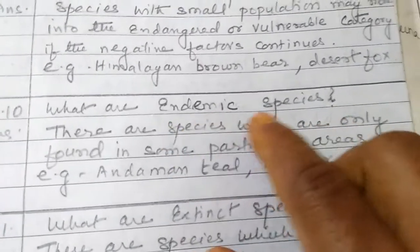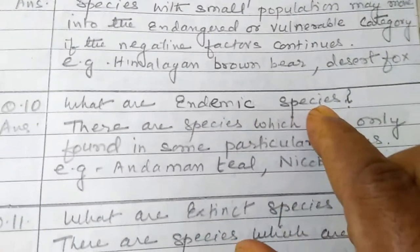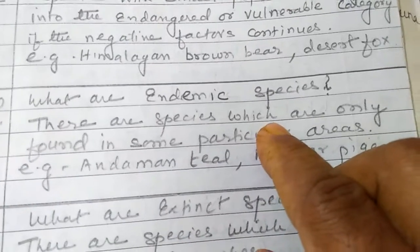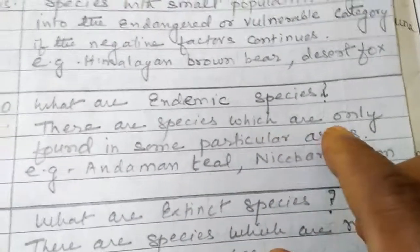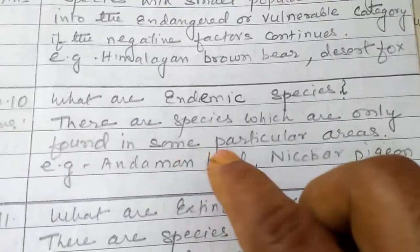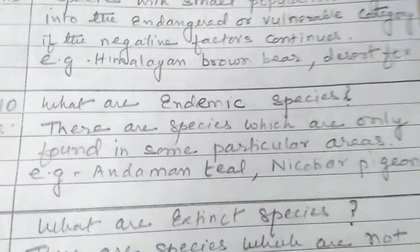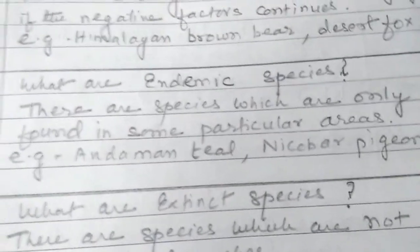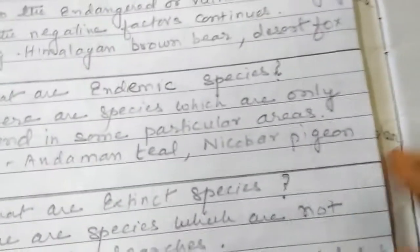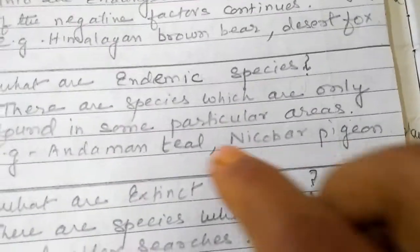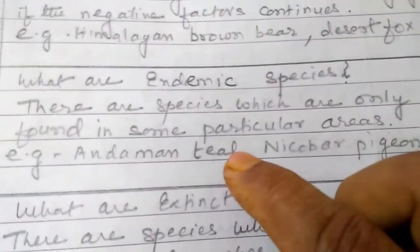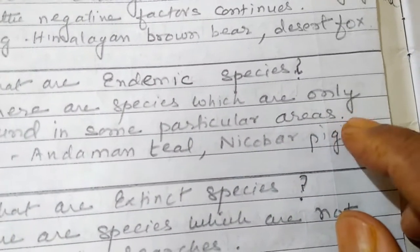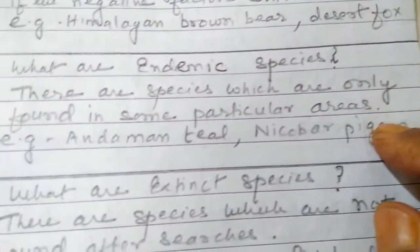Question: What are endemic species? These are species which are only found in some particular geographical areas. Examples include Andaman teal, found only in the Andaman Islands, and Nicobar pigeon, found only in the Nicobar Islands.